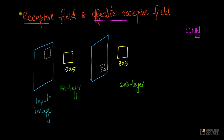The term receptive field itself comes from neuroscience, but its application in the context of CNNs is as follows. Imagine if I have an image, and in the very first layer I have a convolutional filter or convolutional kernel that is 5x5. Of course, I'll not have just one kernel — I'll have multiple kernels. But let's look at it from the perspective of just one kernel. So this kernel is 5x5.